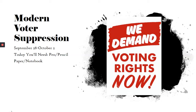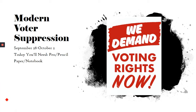Hey everyone! Welcome to the week of September 28th through October 2nd. Last week we started working on doing inferences with social studies and spent a lot of time talking about voter rights and how voter rights evolved over American history. This week we're going to talk about modern voter suppression — we're still going to be making inferences, but we're going to apply it to today. Make sure you have a pen, pencil, and your paper or notebook so we can take notes as we go along.